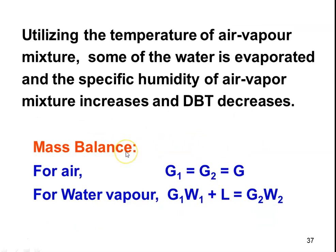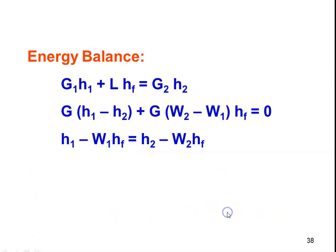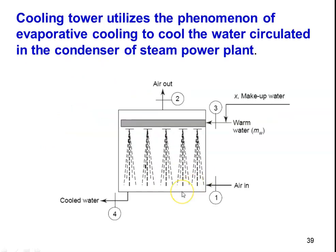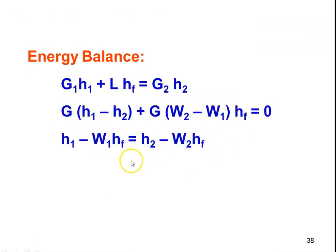Water is sprayed in the duct where air and water vapor circulate, maintaining constant enthalpy while adding water vapor. For the mass balance: G1 = G2 = G for air; G1·W1 + L = G2·W2 for water vapor. Energy balance: G1·H1 + L·HF = G2·H2, which gives H1 − W1·HF = H2 − W2·HF — this is the energy balance for evaporative cooling.